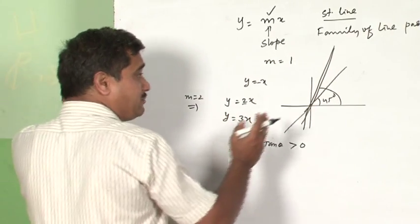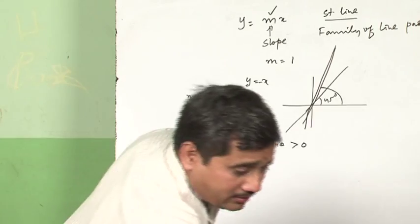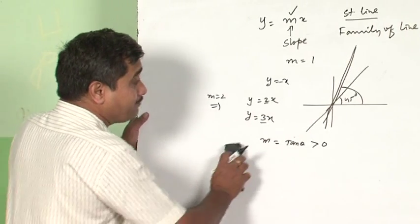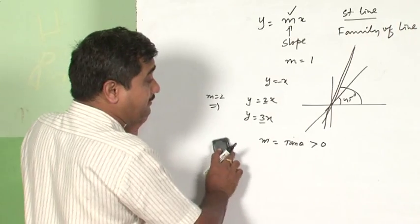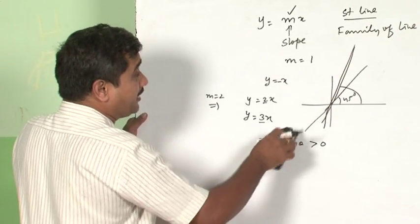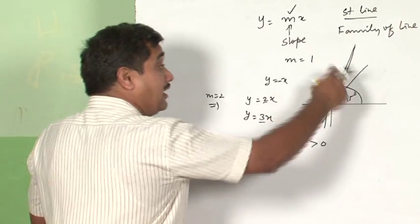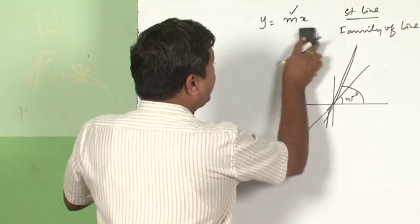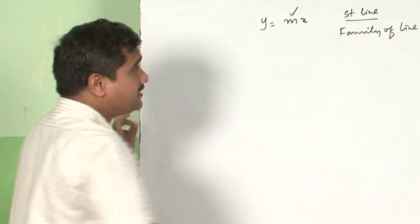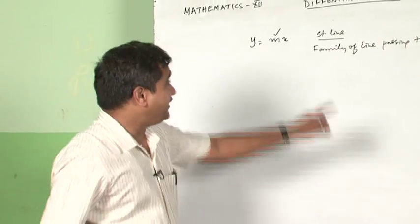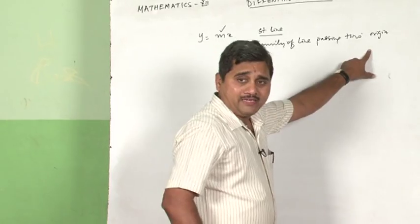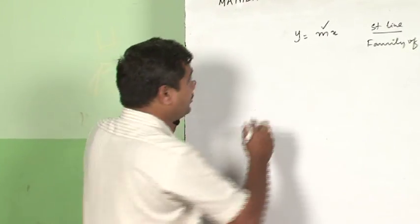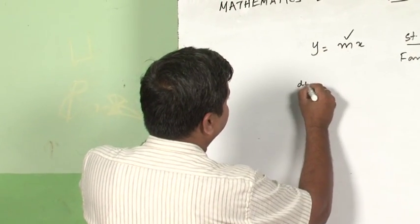So what happens here is that tan θ is changing, which means the direction of the straight line is changing automatically. Therefore, y = mx is not one line but rather a family of lines passing through the origin. Now, why did I take this example? Suppose I differentiate y = mx — what will I get?